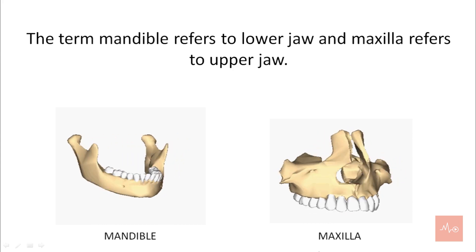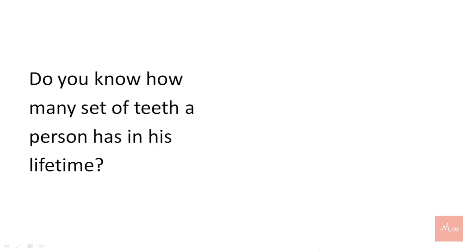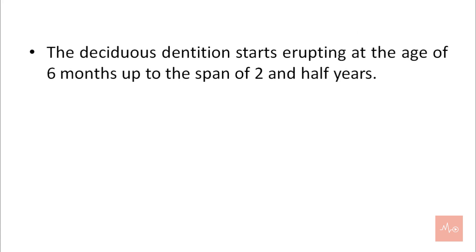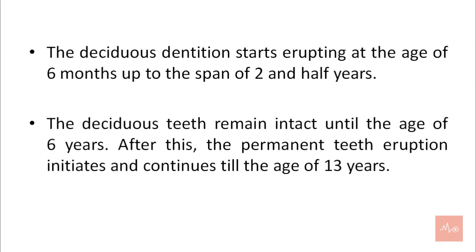Do you know how many sets of teeth a person has in his lifetime? A person has two sets of teeth: the deciduous teeth and the permanent teeth. Deciduous teeth are 20 in number and permanent teeth are 32 in number. The deciduous dentition starts erupting at the age of 6 months up to the span of 2.5 years. The deciduous teeth remain intact until the age of 6 years.